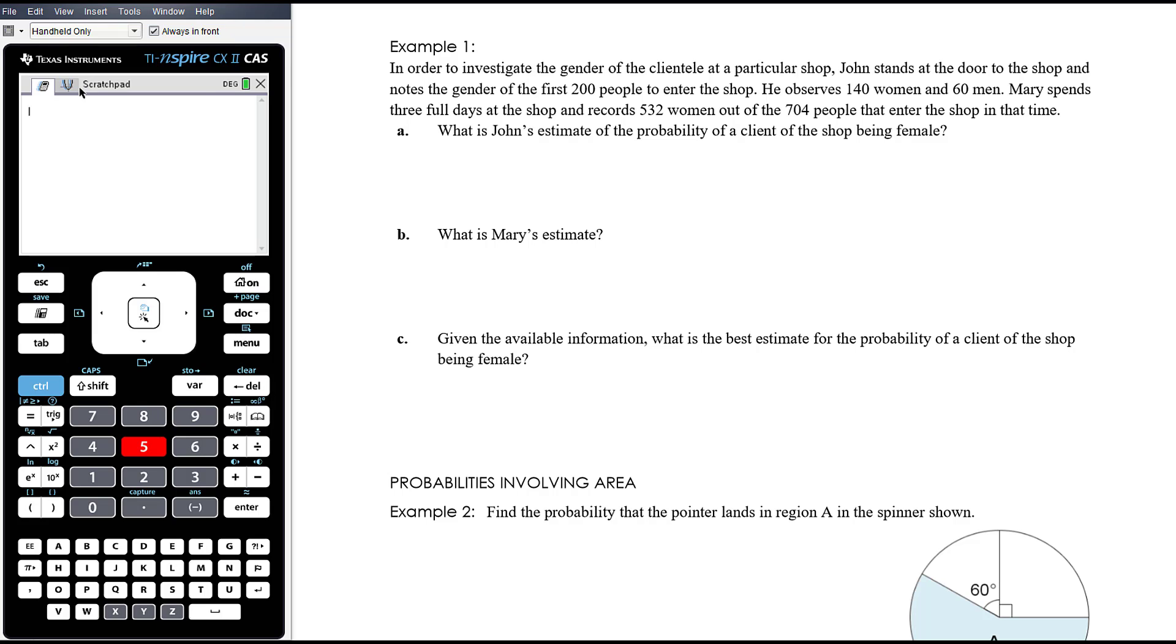What is John's estimate of the probability of a client of the shop being female? So John's estimate is going to be 140 women out of the 200 people he observed. So that is 14 out of 20, which is 7 out of 10 or 0.7.